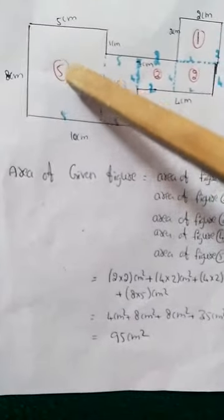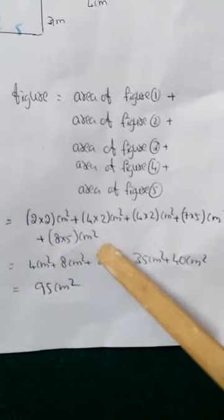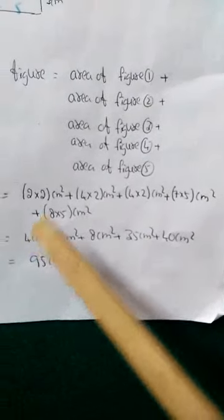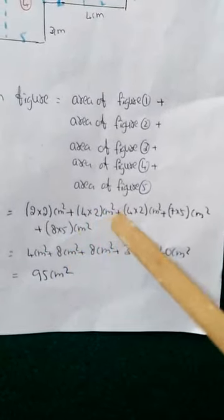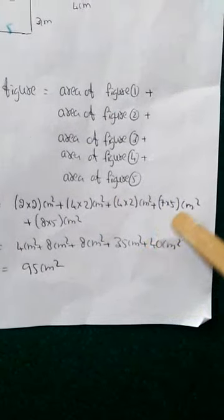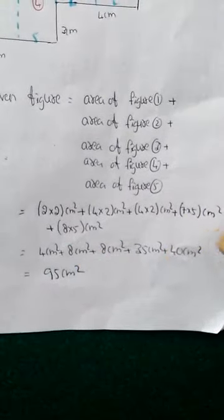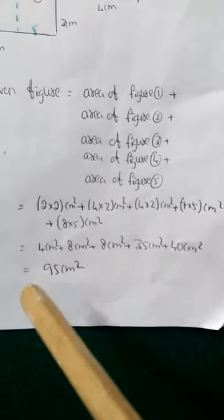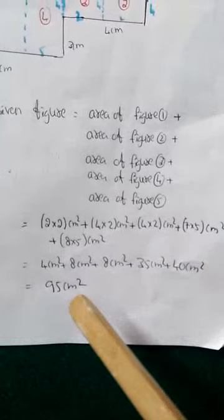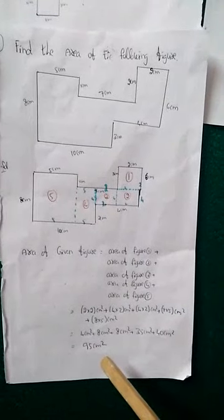Area of Figure 5 — length × breadth: 8 × 5 square centimeters. Now simplification: 2×2=4, 4×2=8, 4×2=8, 7×5=35, 8×5=40. After addition: 4 + 8 + 8 + 35 + 40 = 95 square centimeters. So the area of this total figure is 95 square centimeters.